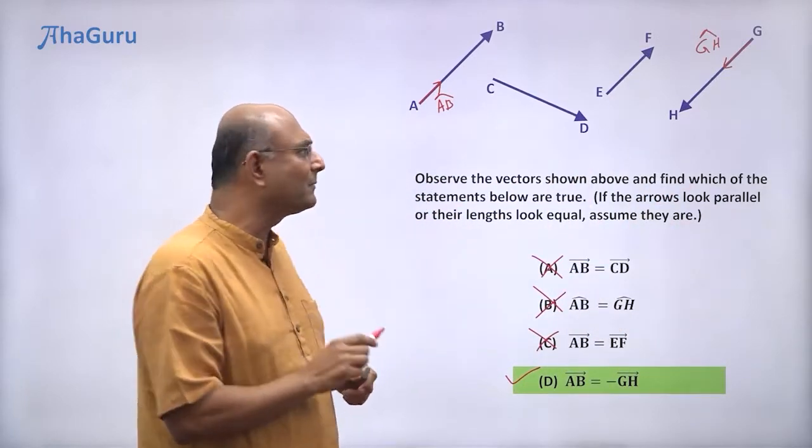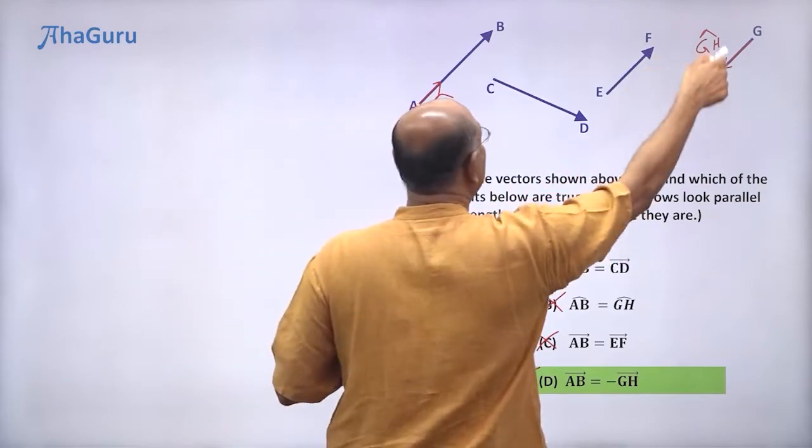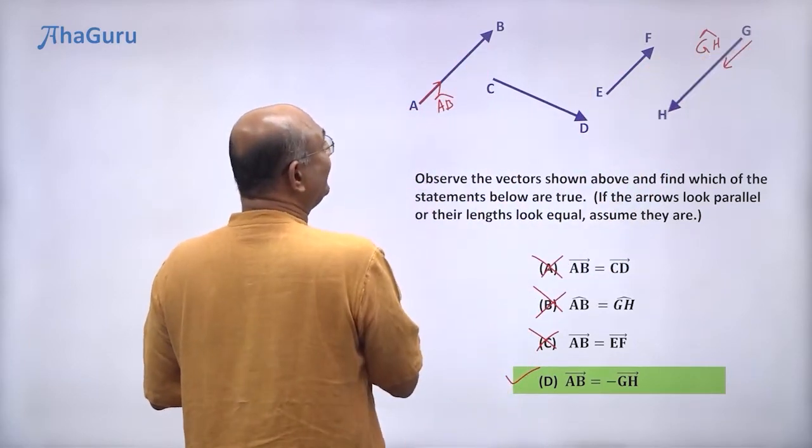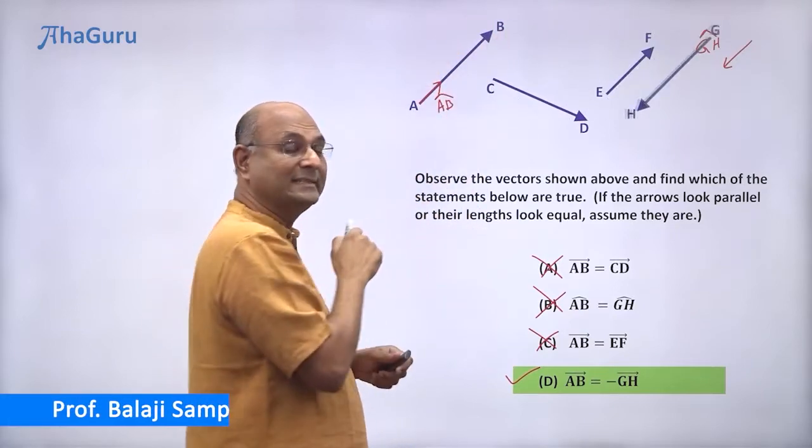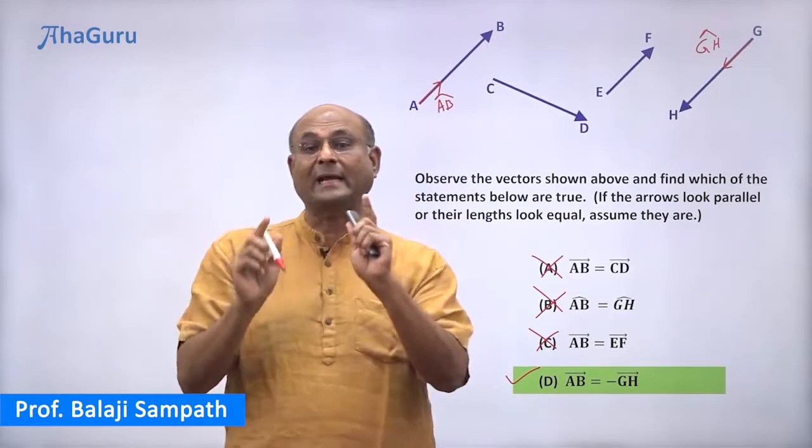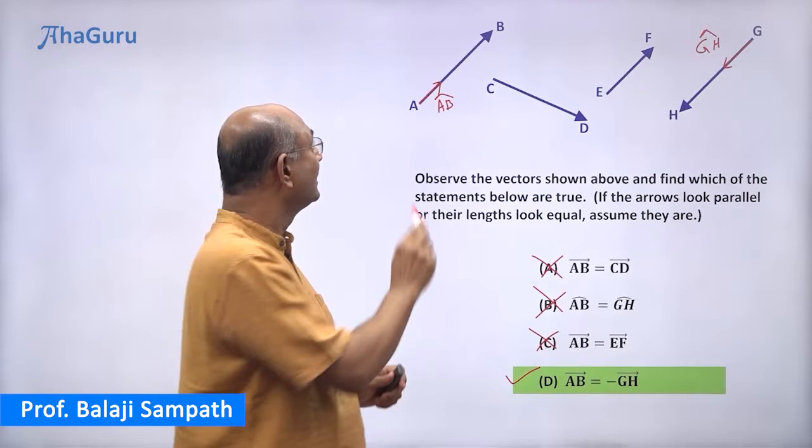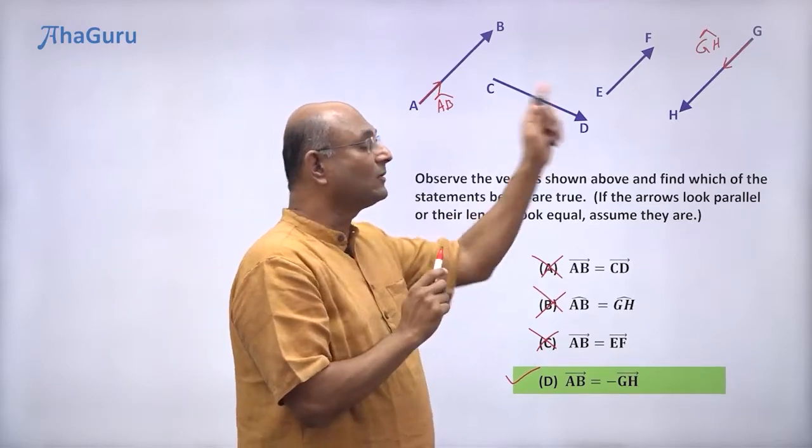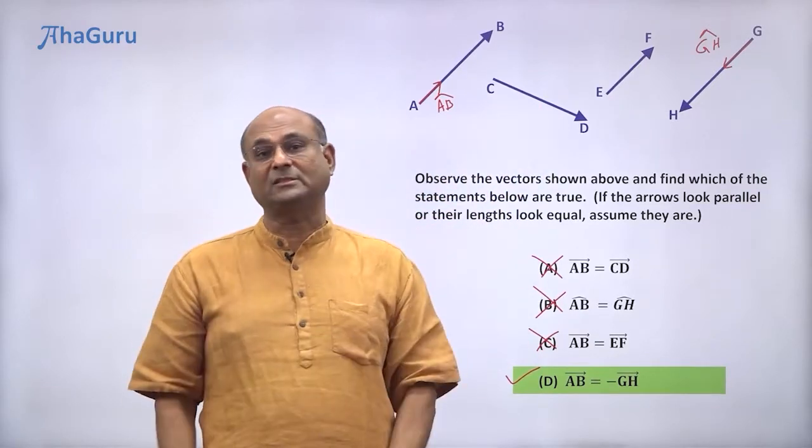Now, shall we just move it a little bit and see? If I take this arrow and bring it here, it should perfectly align. So we can move it now and see that yes, it is exactly the same length and exactly in the opposite direction. So AB vector is equal to minus GH vector.